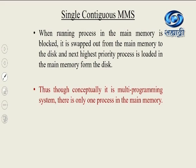This doesn't happen in uniprogramming. In a uniprogramming operating system, if a process is blocked for I/O, the processor remains idle, and the process is only taken out of memory when it is terminated — that is, when it is completed. Thus, though conceptually this single contiguous memory management system looks like a multiprogramming system, there is only one process in the main memory.